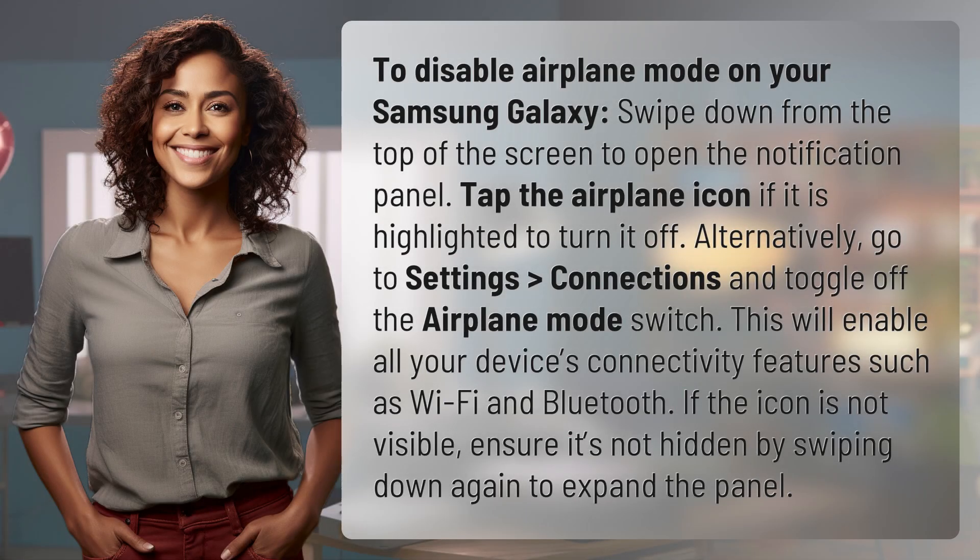To disable airplane mode on your Samsung Galaxy, swipe down from the top of the screen to open the notification panel. Tap the airplane icon if it is highlighted to turn it off. Alternatively, go to Settings, Connections, and toggle off the airplane mode switch.